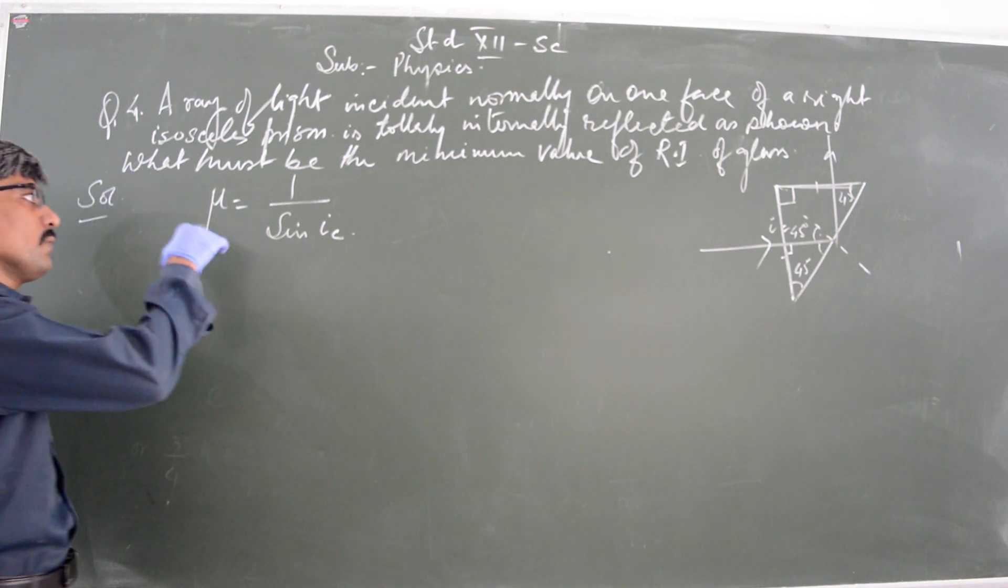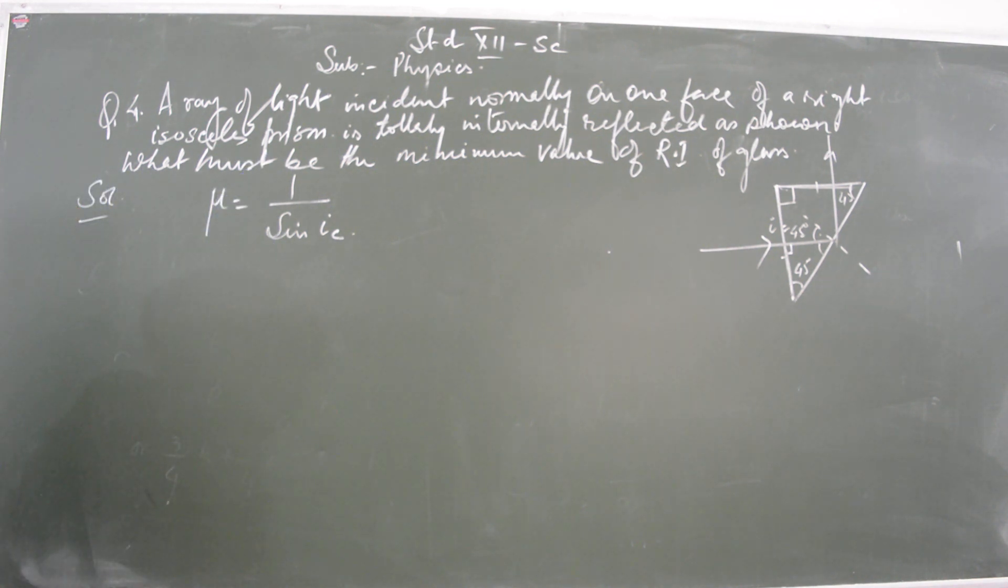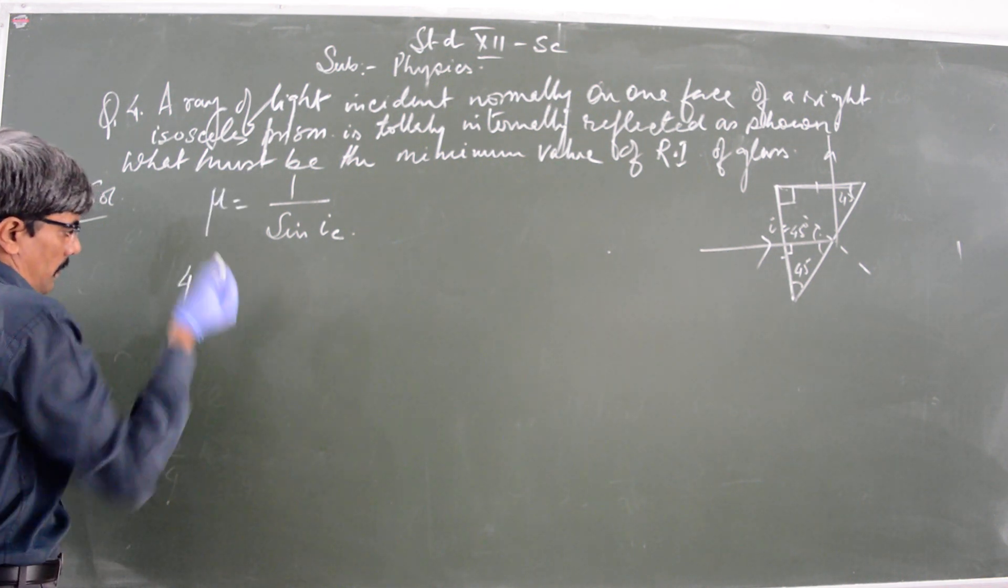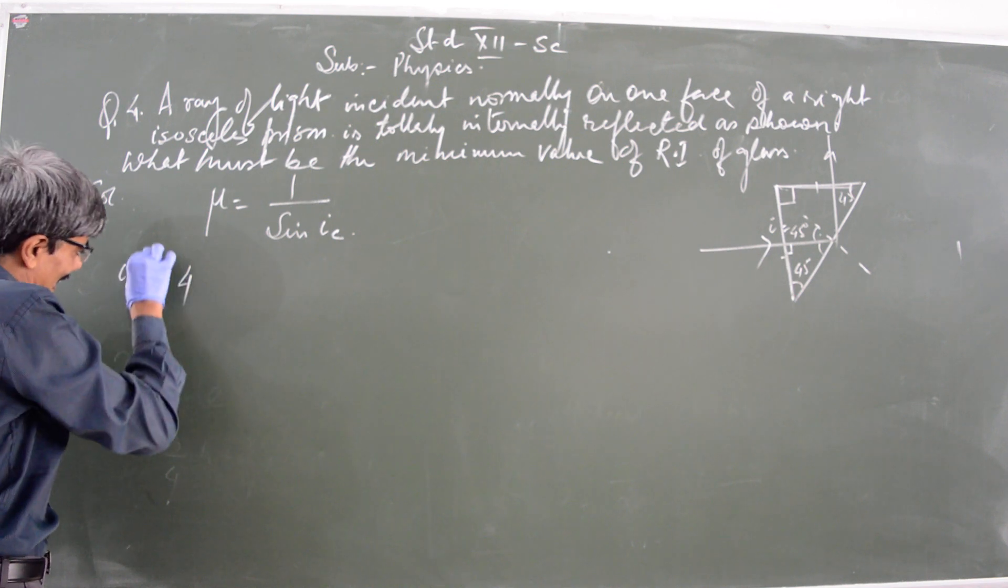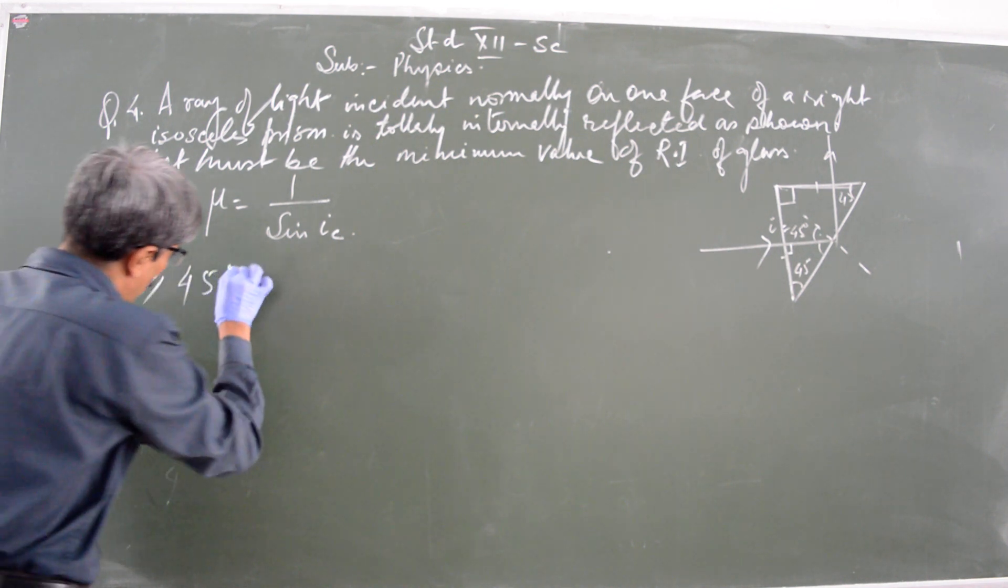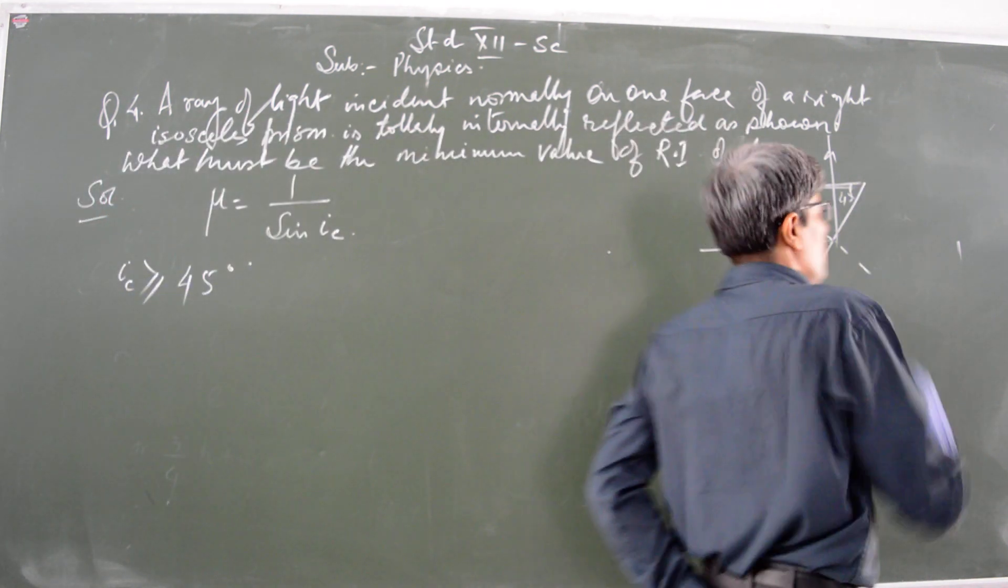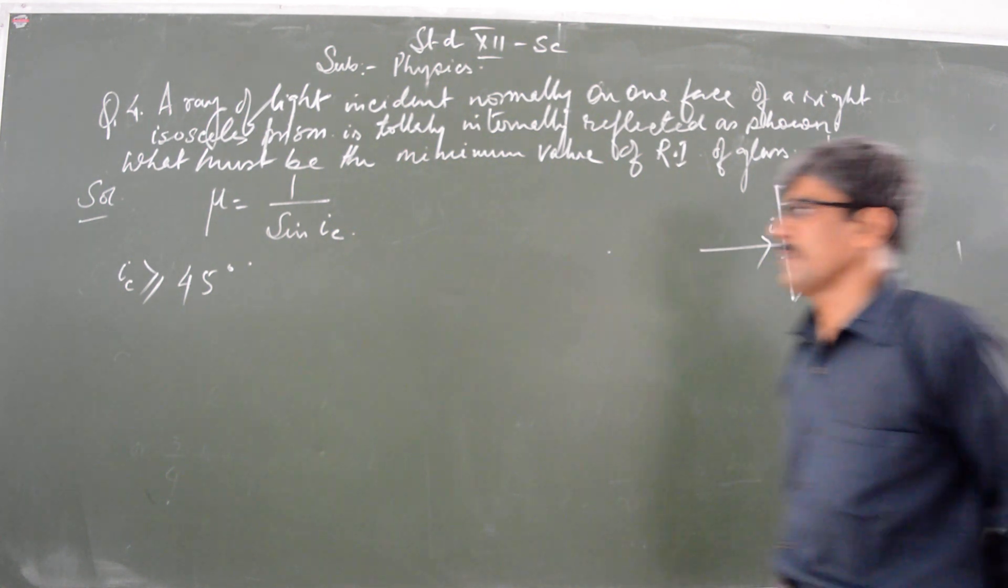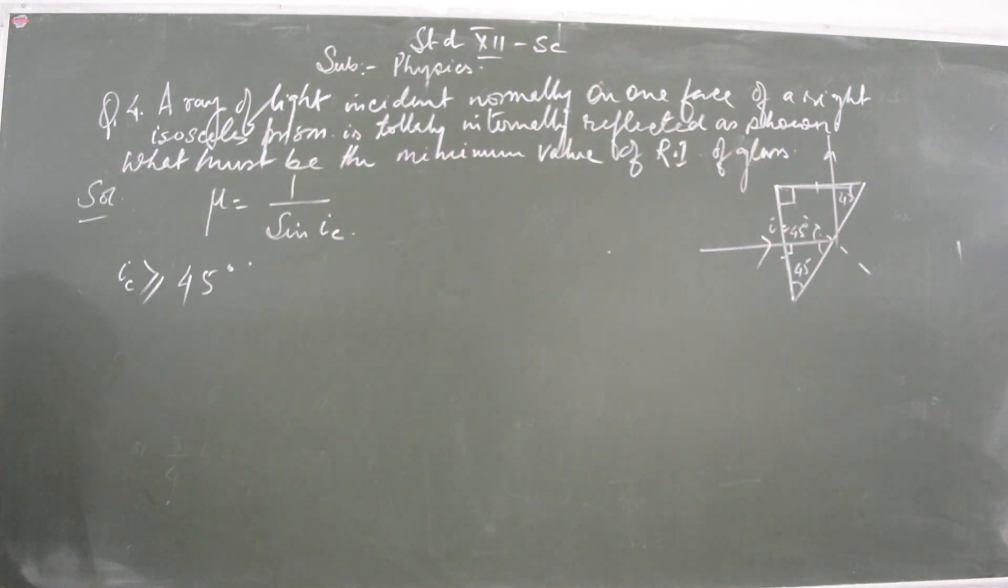So μ is equal to 1 divided by sine IC, the critical angle. Now one more thing that we need to know: in this case, 45 degrees is the critical angle. So if the critical angle is greater than 45 degrees, then only total internal reflection is possible.